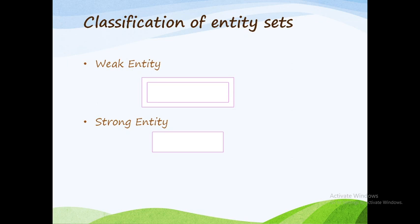Next, the classification of entity sets. Generally, entities are known in two forms: the first one is Weak Entity, and the second one is Strong Entity. A weak entity is one whose existence depends on another entity.